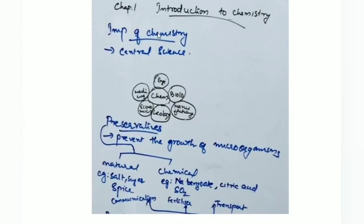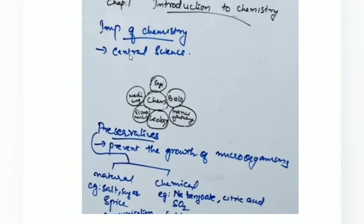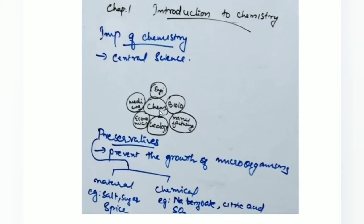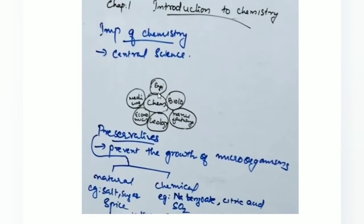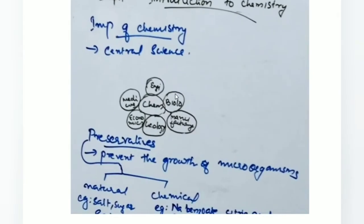Chemistry is known as the central science. It is surrounded by engineering, biology, manufacturing, geology, economics, and medicine — chemistry is included in everything.